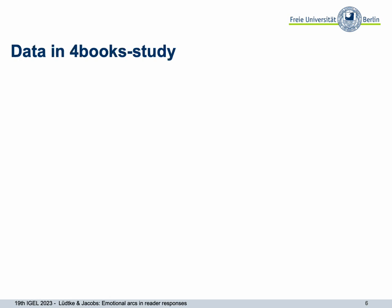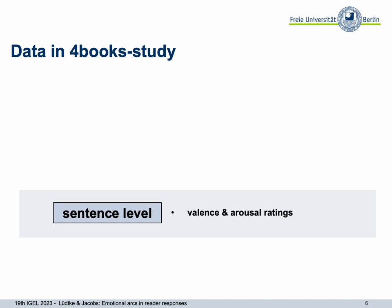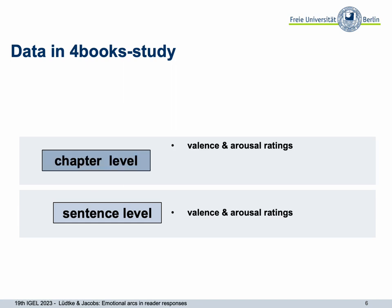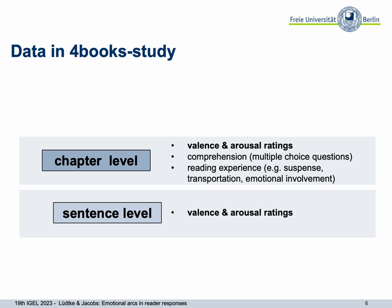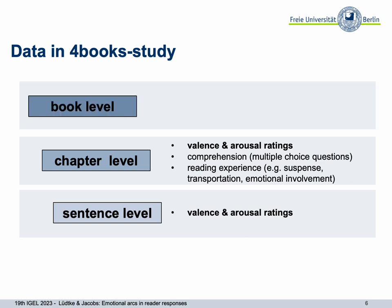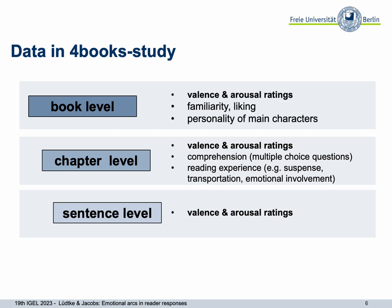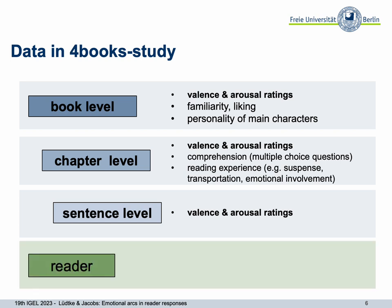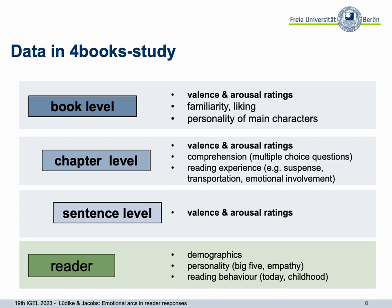This creates a lot of data. At sentence level, we have valence and arousal ratings. At chapter level, we also have valence and arousal ratings, but also information about comprehension and the reading experience. At book level, we again asked for valence and arousal — meaning after reading the last chapter, participants indicated the valence and arousal of the entire book. We also asked for familiarity, liking, and for the personality of the main characters. Moreover, there were questions about the reader itself — for example, personality aspects and reading behavior.